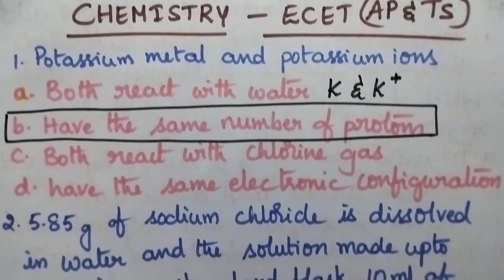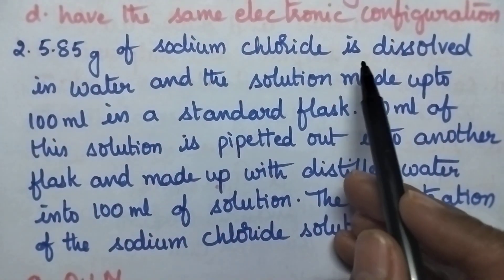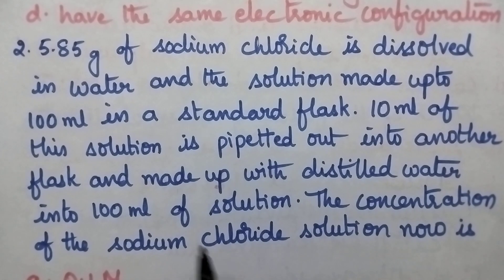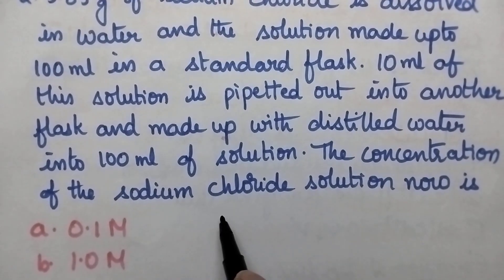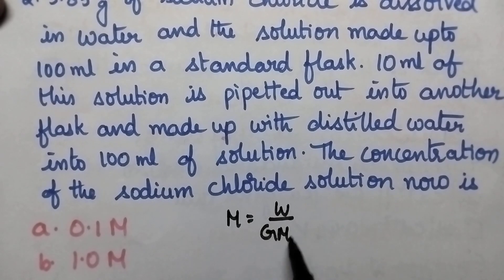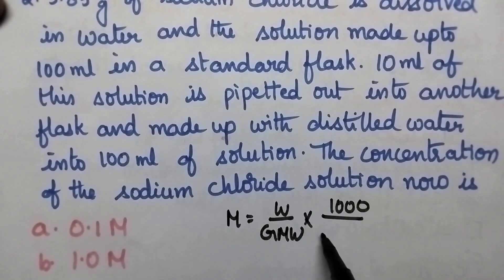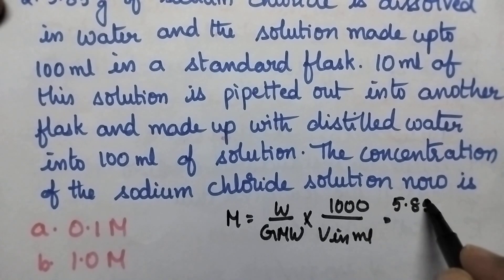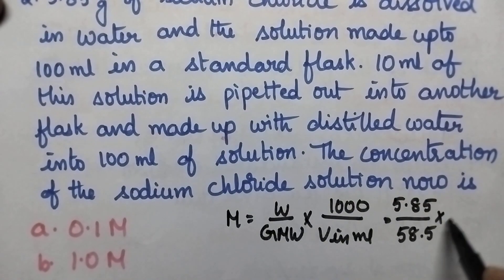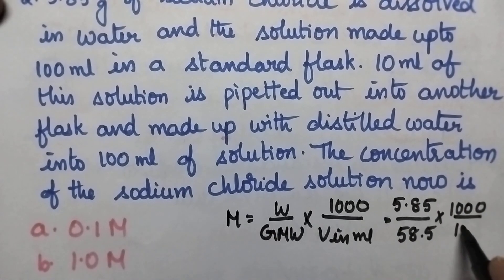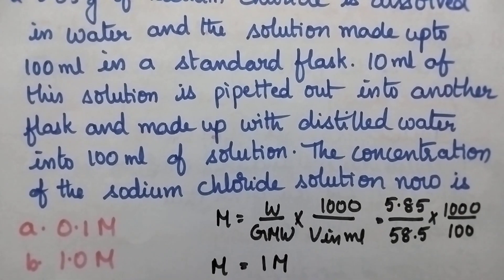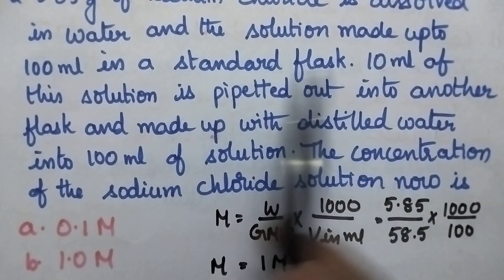5.85 grams of sodium chloride is dissolved in water and the solution made up to 100 ml in a standard flask. The molarity formula is: molarity = weight / gram molecular weight × 1000 / volume in ml. Here the weight is 5.85 g, gram molecular weight is 58.5, and volume is 100 ml, so molarity of the solution is 1 molar.